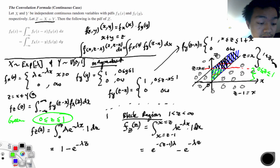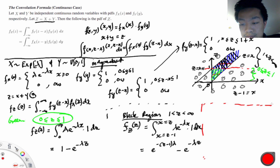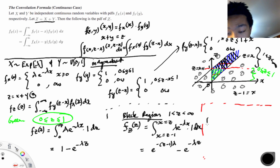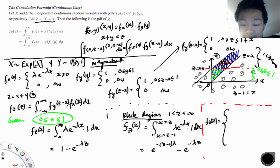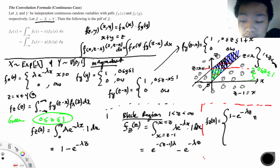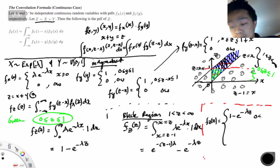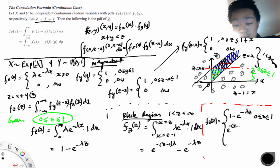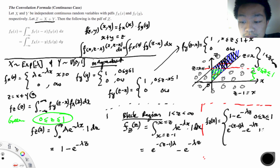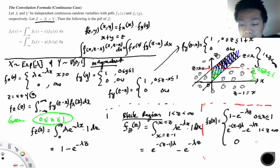Your finished product is a piecewise density function fz: it equals 1 - e^(-lambda*z) for z in (0,1), and e^(-lambda*(z-1)) - e^(-lambda*z) for z in (1, infinity), and 0 otherwise. When dealing with these problems, you have to take the limits carefully because you get different behaviors in x depending on where you start. Also note the strip is infinite since x goes on forever.